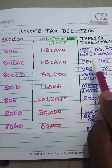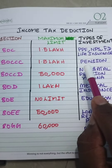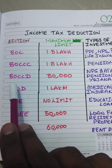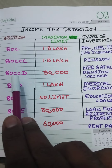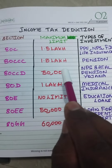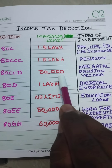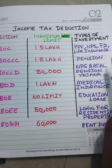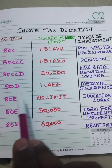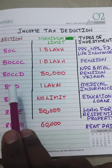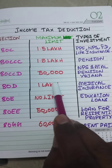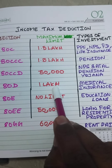Section 80CCD has a maximum limit of 50,000 where you can submit NPS and Atal Pension Yojana documents. Section 80D has a maximum limit of 1 lakh.